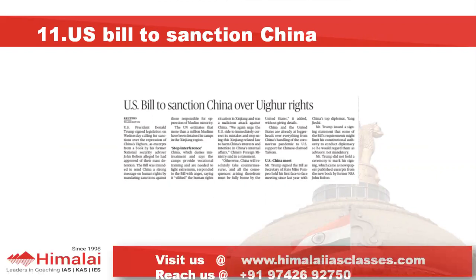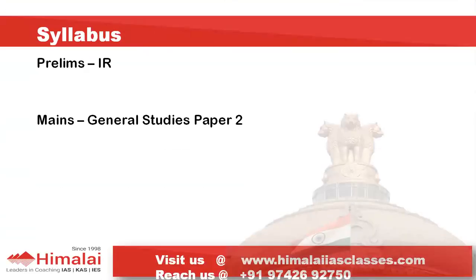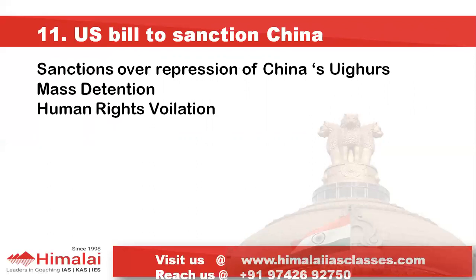Another news item is again related to the United States — this time about passing a bill to put sanctions on China. Syllabus-wise it is part of IR, General Studies Paper 2. The sanctions are related to the repression of the Chinese ethnic community known as Uyghurs, who live in the north-western part of China. Please remember: UPSC has previously asked about communities and their locations. Uyghurs follow Islam and live in China. China has conducted mass detentions and there are reports of human rights violations. The US has passed a bill that the US should impose sanctions on China because of these actions.